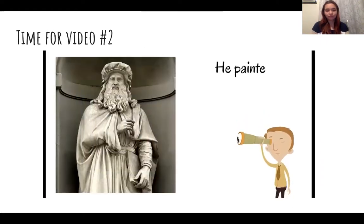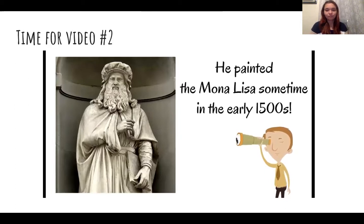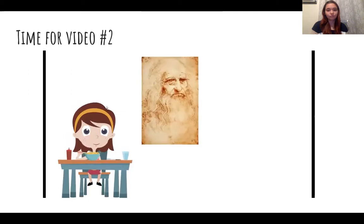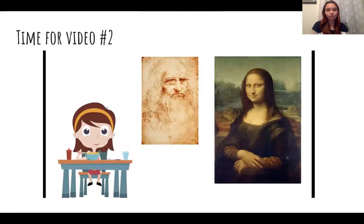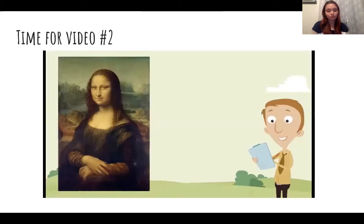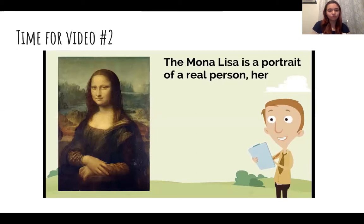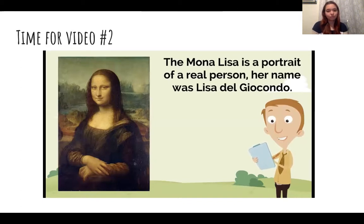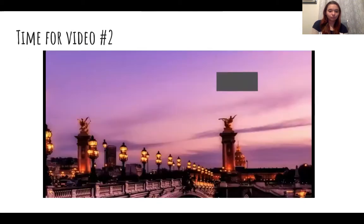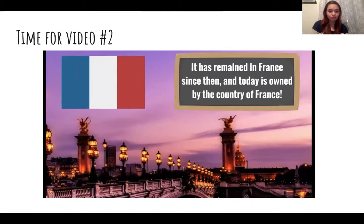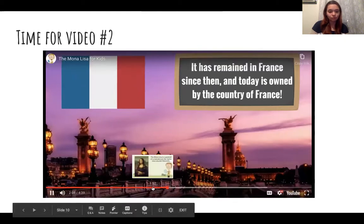Here is a statue of Leonardo da Vinci. He painted the Mona Lisa sometime in the early 1500s. The Mona Lisa is a portrait of a real person — her name was Lisa del Giocondo. Her husband commissioned the painting. Leonardo da Vinci never got paid for the Mona Lisa and didn't finish the painting until years later when he was living in France. It has remained in France since then and today is owned by the country of France, so the Mona Lisa will never be sold and remains one of the greatest art treasures in the world.